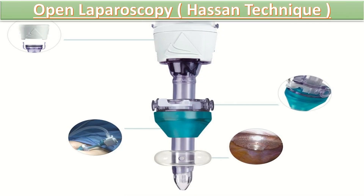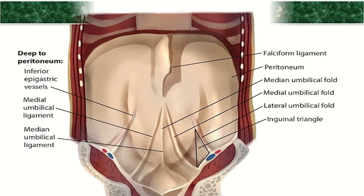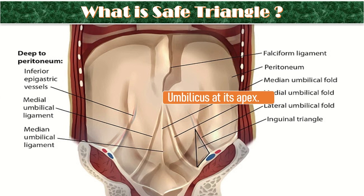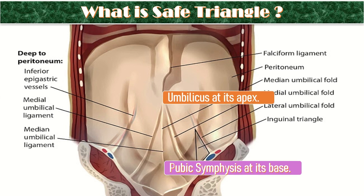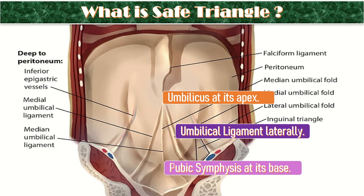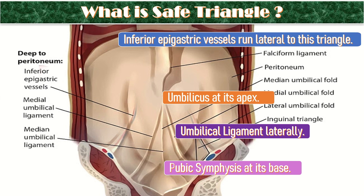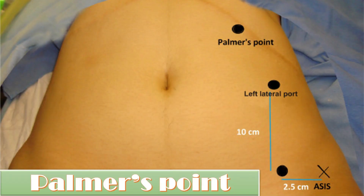In open laparoscopy or Hasson's technique, an infraumbilical incision is given first; insert the central trocar and cannula, then create pneumoperitoneum to reduce the risk of vascular injury. The safe triangle has its apex at the umbilicus, base at the pubic symphysis, and lateral boundaries at the umbilical ligaments; inferior epigastric vessels run lateral to this triangle. Lateral ports should be placed either inside the safe triangle or lateral to the inferior epigastric vessels.